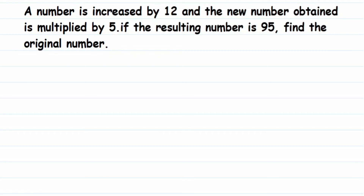Hi everyone, here's one more question on linear equations. This is a simple question — the question looks a bit big but it's simple. So let's read it: a number is increased by 12 and the new number obtained is multiplied by 5. If the resulting number is 95, find the original number. The main goal is to find out that number.